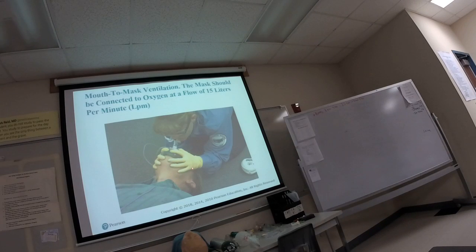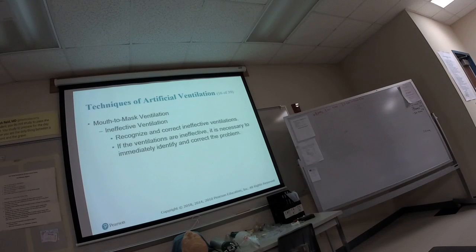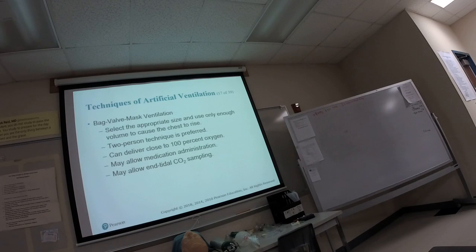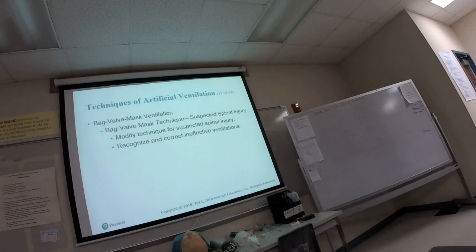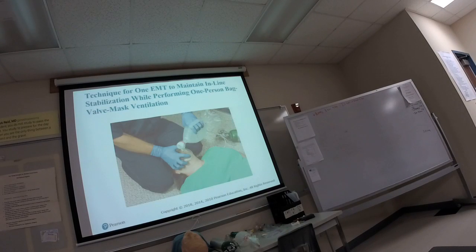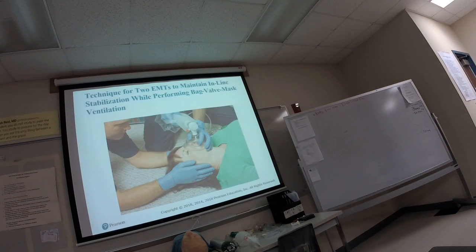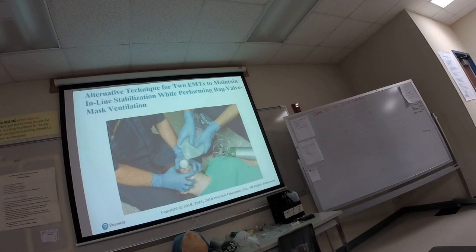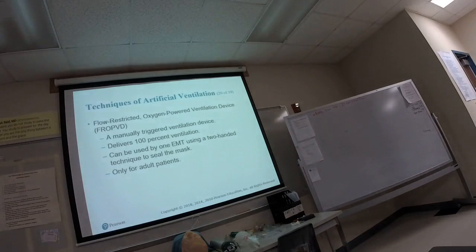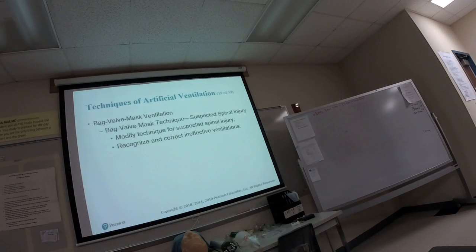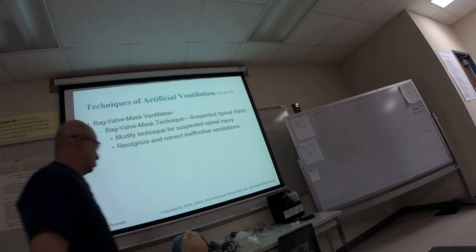With someone who has trauma, you need to keep the head in line — use in-line stabilization rather than a head tilt chin lift. With a bag valve mask on a trauma patient, you would do in-line stabilization, holding the c-spine with your knee or having another person hold c-spine. You would do the same with the pocket mask — maintain the c-spine throughout ventilation.